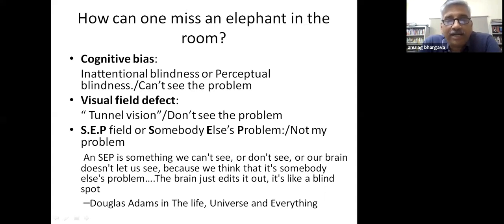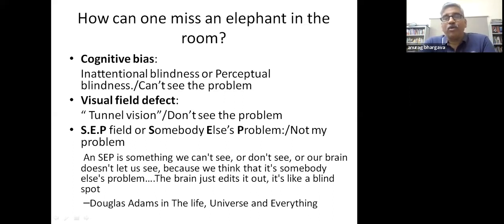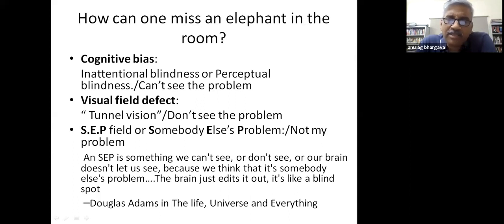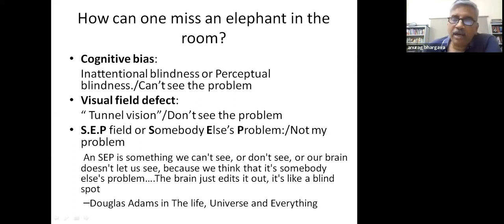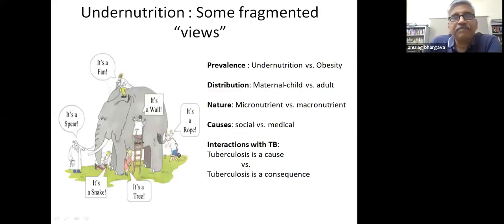Douglas Adams wrote about the 'somebody else's problem' field in one of his novels—something we can't see or don't see because our brain doesn't let us, since we think it's somebody else's problem. This is partly the view sometimes taken on undernutrition and poverty in the context of TB.